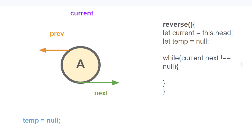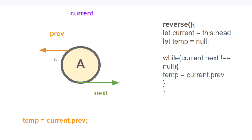We also want to create a variable called temp and establish it as null. Temp is going to be a placeholder that allows us to kind of switch things out. The next step is we just want to set our temp to the previous. We didn't say current.previous equals temp — we just set our temp to this previous part. It's a little tricky, but you'll see what's happening.